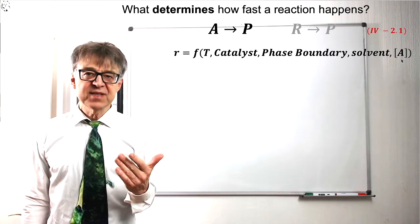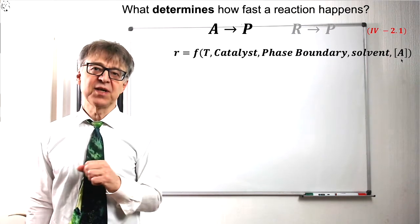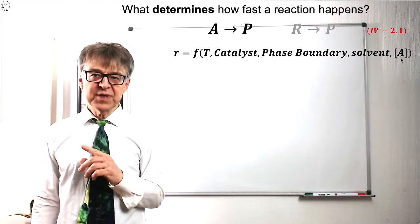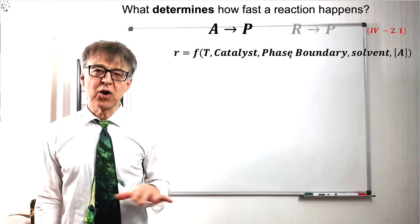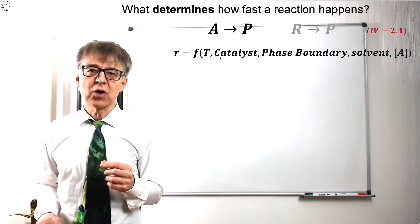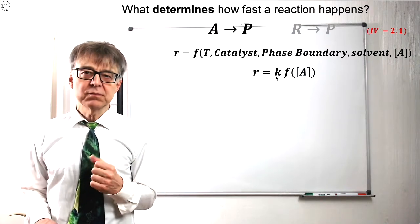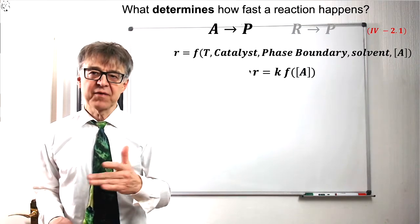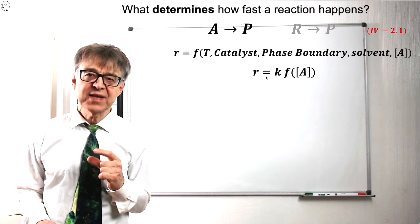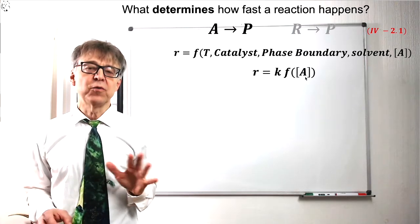The dependence on the concentrations of the reactants is particularly important. For this reason, all other variables are combined to form a so-called rate constant k. The resulting equation, reaction rate R at the function of the concentrations of the reactants, is the so-called rate law.